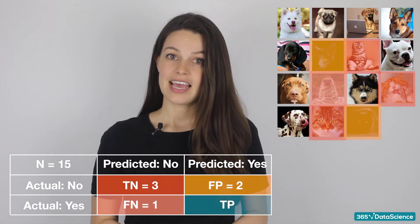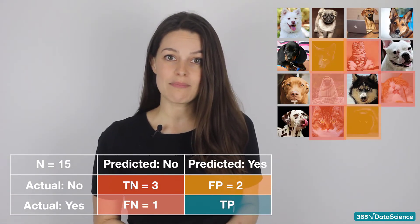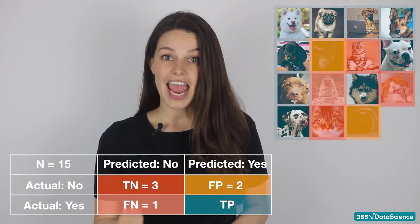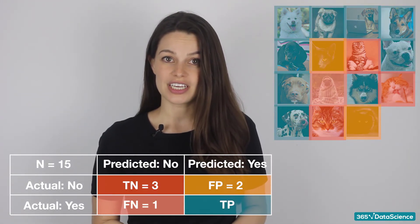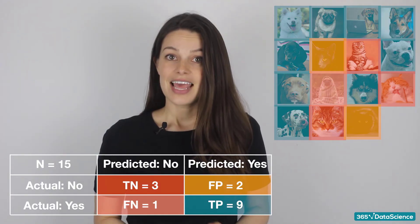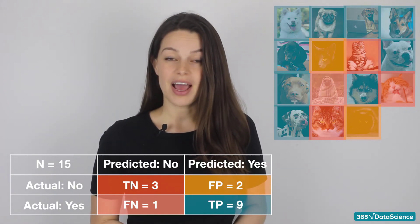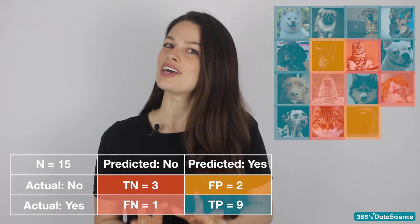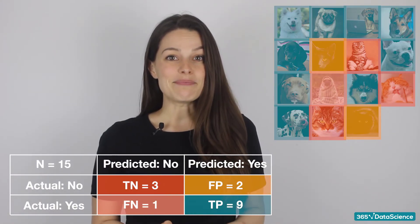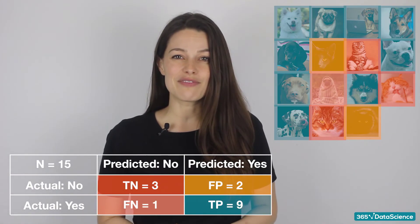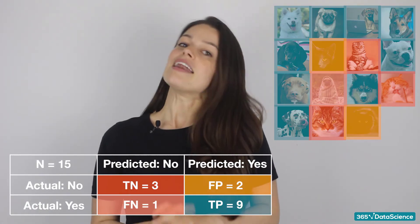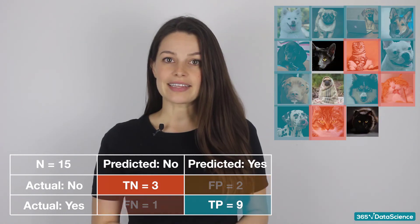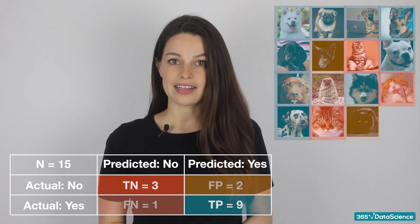Finally, we have the bottom right. Here are the number of times that the model predicted it was a picture of a dog, and it was in fact a picture of a dog. Here we write nine. These are the true positives — another correct prediction. Now you can see why this is called a confusion matrix. It's simple, but still a little confusing to map out.